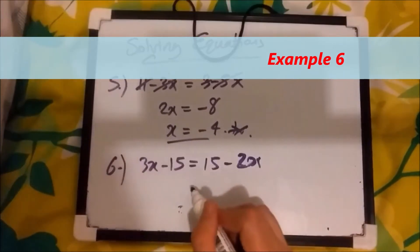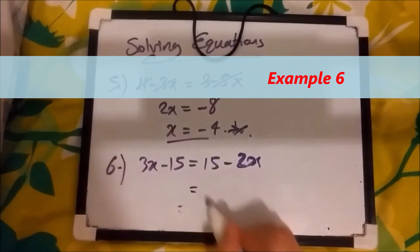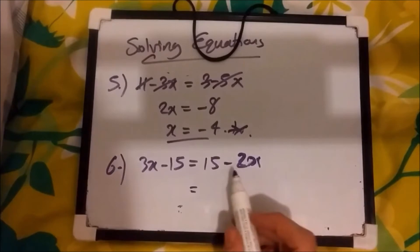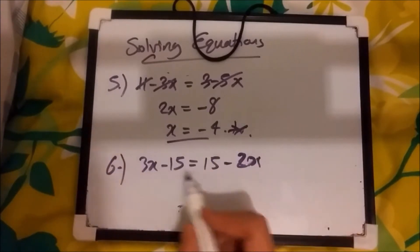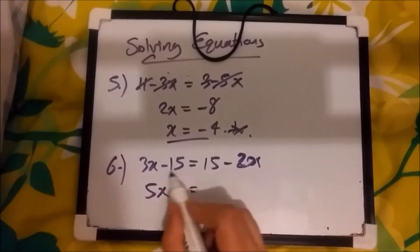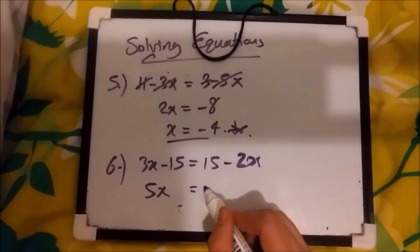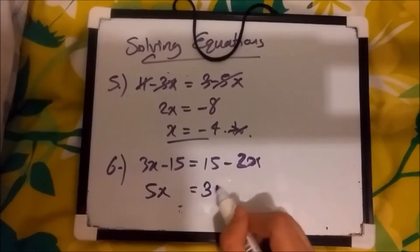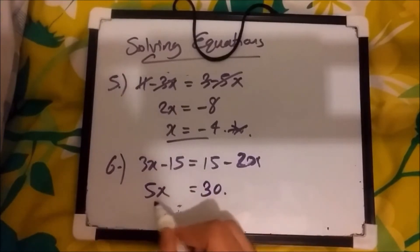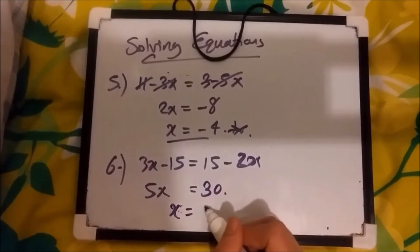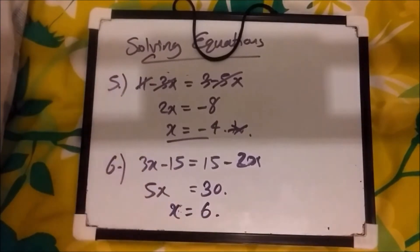For number 6, we have 3x minus 15 equals 15 minus 2x. Once again, let's move minus 2x across. It becomes a plus 2x. 3x add 2x is 5x. Move that minus 15 across. It becomes plus 15. So 15 add 15, that's just double 15. That's 30. And finally, for 5x equals 30, if you just divide it by 5, you'll be left with x equals 6. And that's it. That's that question done.